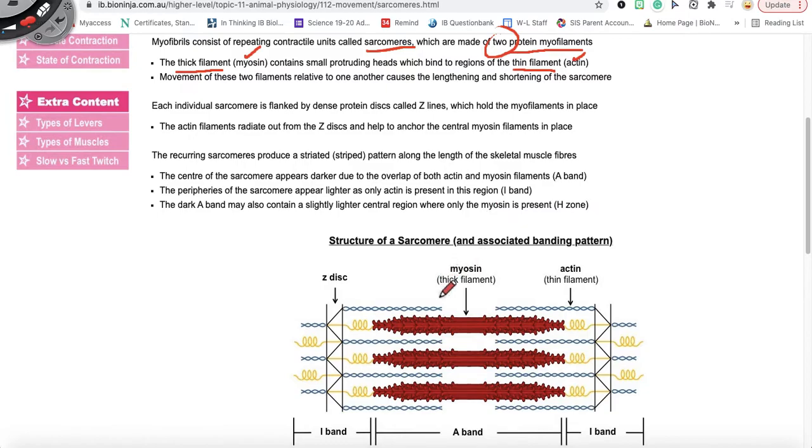So if you look at the myosin or the thick filament, notice how it's drawn thicker and also notice how it has these small protruding heads. So these little small protruding heads right there.